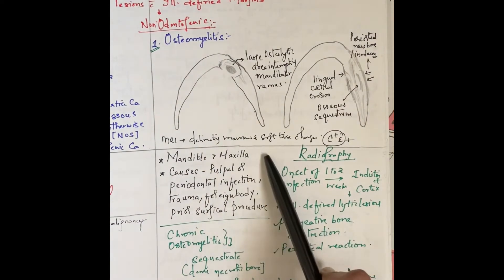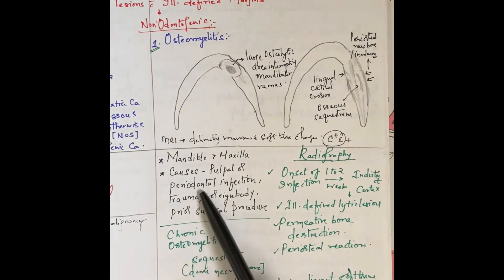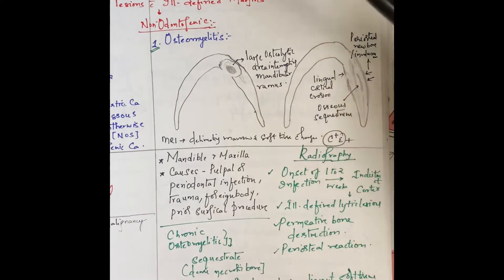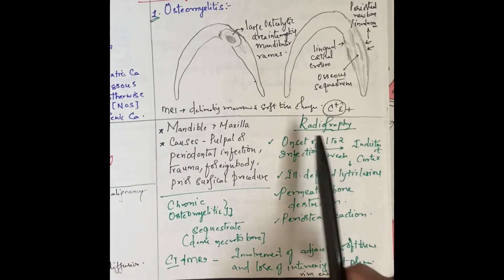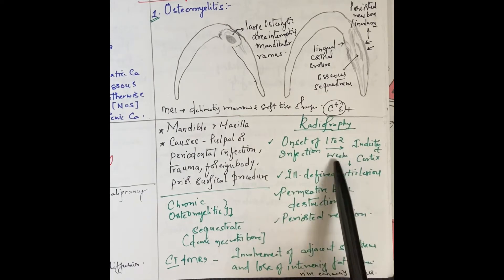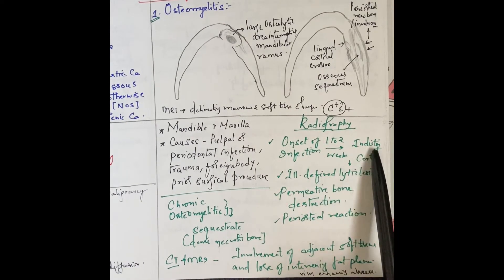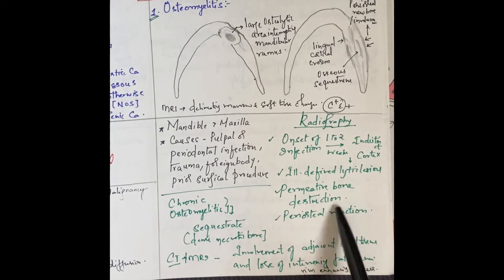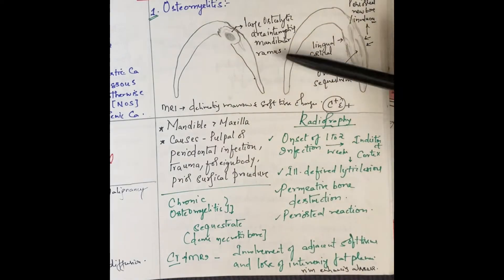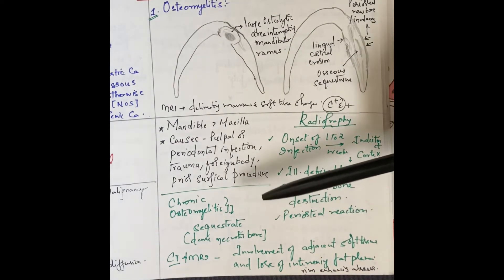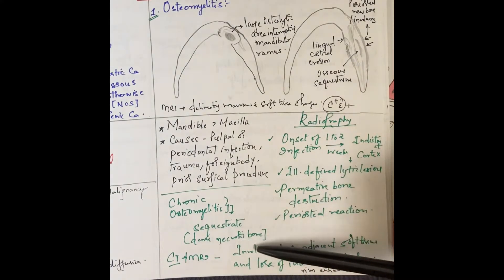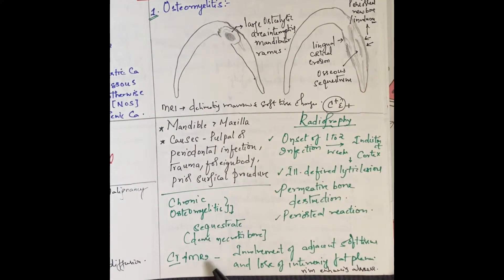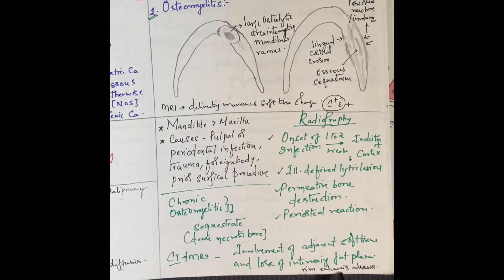On MRI, the marrow and soft tissue changes can be seen clearly with contrast enhancement. Mandible is more commonly involved than maxilla. Sources of infection can be periodontal infection, trauma, foreign body, or prior surgical procedures. On radiography, after onset of infection it takes one to two weeks for the cortex to become indistinct; later we find ill-defined lucencies, permeative bone destruction, and finally periosteal reaction. In chronic osteomyelitis, sequestrum — that is dense necrotic bone — is seen. CT and MRI are useful for assessing adjacent soft tissues, loss of intervening fat planes, and rim-enhancing abscesses.